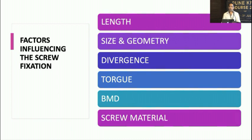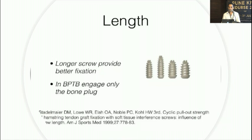Many factors affect interference screw fixation: length, size, geometry, divergence, torque, bone quality, and screw material. Length must be carefully managed — avoid going beyond the articular surface, but maximize length for better hold and purchase. The size should ideally be 1 mm more than the tunnel diameter, though for a soft tissue graft on the tibial side you can go 2 mm up.